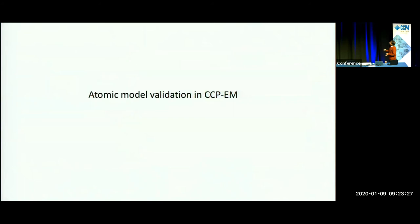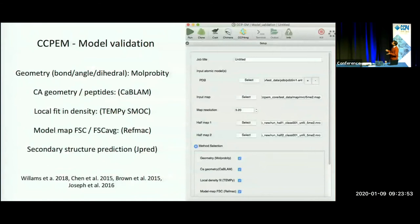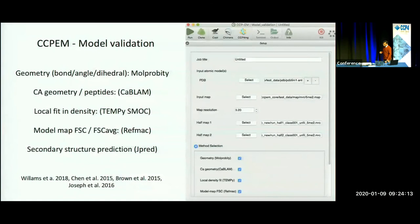Moving on to model validation: we are developing an interface for atomic model validation in CCPEM, which involves a combination of different tools looking at different aspects of the model. In cryo-EM we deal with data at different resolutions. If you're working with models fitted on maps beyond five angstroms, for example, it's important to look at the quality of secondary structures and the fit of secondary structures against the map density. There are different aspects of the model we need to look at depending on the resolution of the map.